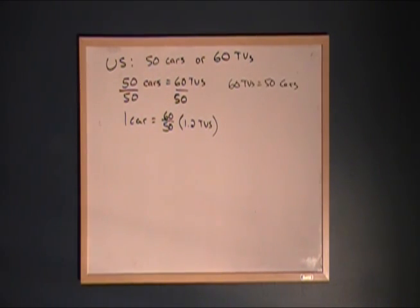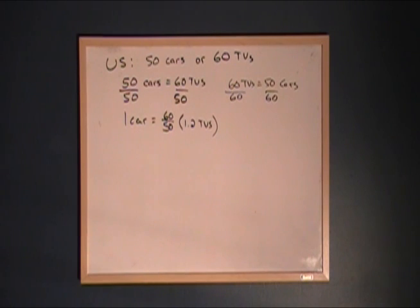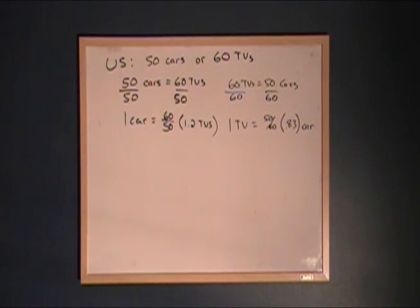We know 60 TVs equals 50 cars. We need to divide both sides by the number of TVs being produced, which is 60. That gives us one television equals 50/60, or 5/6, or about 0.83 cars.